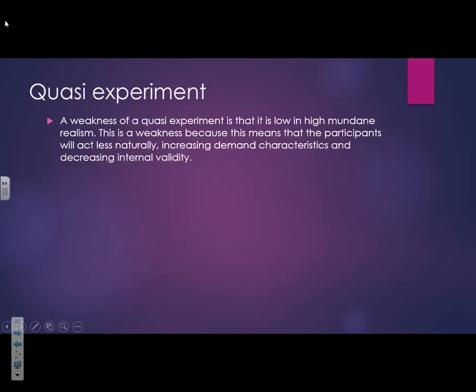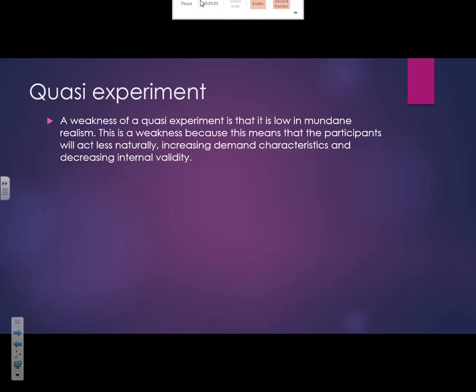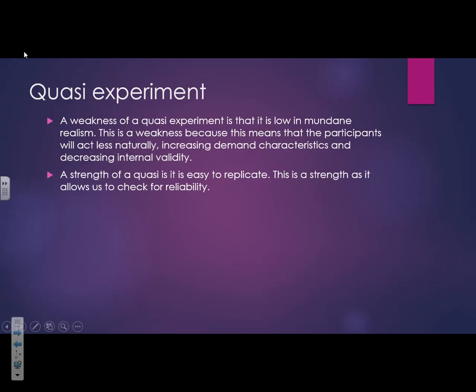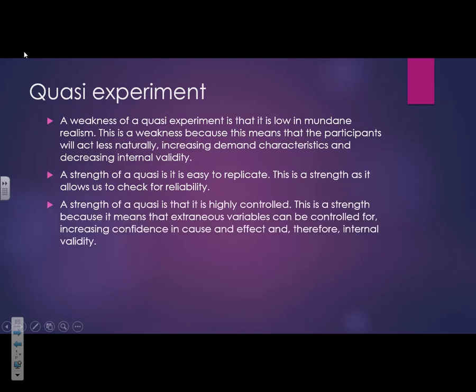Then we have quasi experiments. A weakness of a quasi experiment is that it's low in mundane realism. This is a weakness because participants will act less naturally, increasing demand characteristics and decreasing internal validity. A strength is that they're easy to replicate — like labs — allowing us to check for reliability. A strength of quasi experiments is also that they're highly controlled, so extraneous variables can be controlled for, increasing confidence in cause and effect and internal validity.